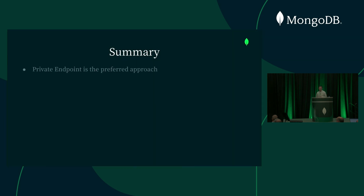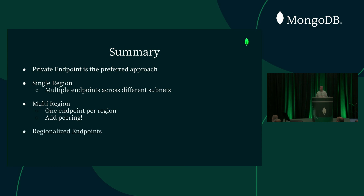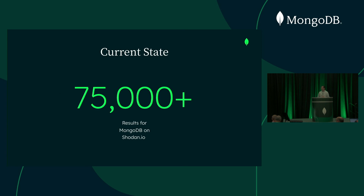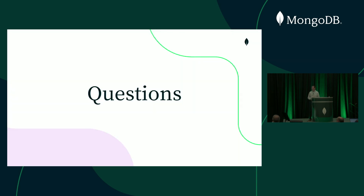To summarize: private endpoint is the preferred approach. For a single region, it's straightforward — you can have multiple endpoints across different subnets. For multiple regions, you can only have one endpoint per region, and you need to add peering on the application side to failover gracefully between endpoints in different regions. The edge case we discussed is regionalized endpoints, which is useful for very segmented environments but has its own drawbacks and isn't a universal solution. Hopefully you learned something today, and we can start making sure this number on Shodan doesn't grow — and over time gets much closer to zero.